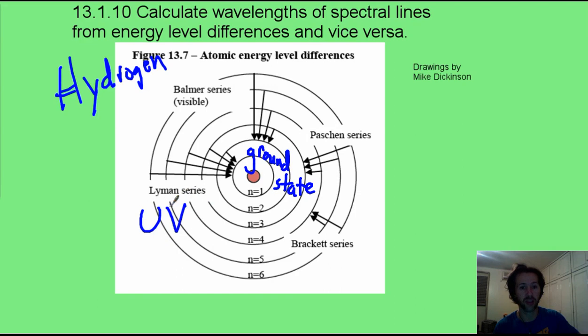We call this Lyman series, and it's actually going to be in the UV. Now these electrons only fall to the second level, that's not as big of a deal, it's not as much energy. And that's why we call this Balmer series, that's only in the visible spectrum. Now here, the electrons are falling in only to the third energy level, and that's why maybe it's not even energetic enough to be visible. Maybe it would be something like infrared.